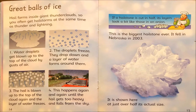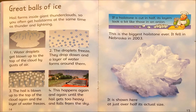Great balls of ice. Hail forms inside giant thunderclouds, so you often get hailstorms at the same time as thunder and lightning. Water droplets get blown up to the top of the cloud by gusts of air. The droplets freeze, then drop down, and a layer of water forms around them. The hail is blown up to the top of the cloud again and the layer of water freezes. This happens again and again until the hail gets too heavy and falls from the sky. If a hailstone is cut in half, its layers look a bit like those in an onion. The biggest hailstone ever fell in Nebraska in 2003.